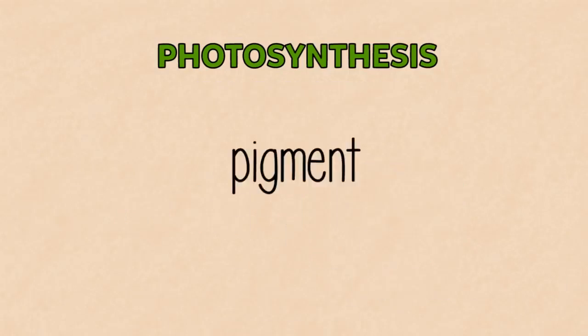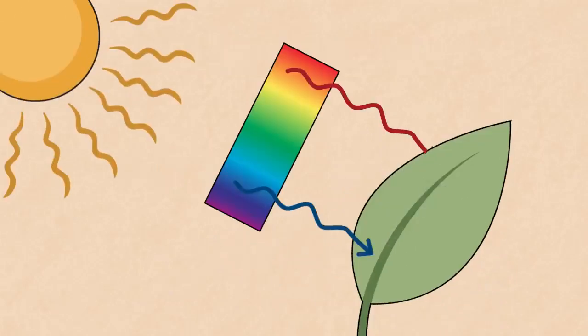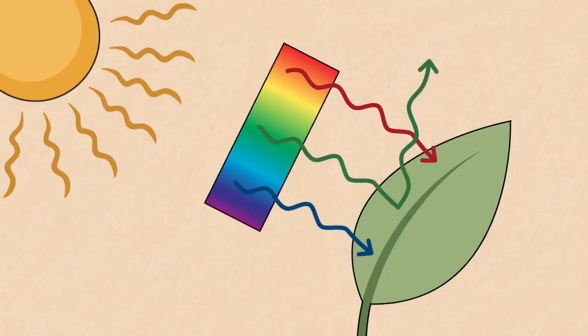Photosynthesis also needs a pigment called chlorophyll. The active site is a magnesium atom, colored green in this model, which absorbs blue and red light from the sun's spectrum to drive the photosynthesis reactions, leaving the green light to be reflected, making the leaves look, well, green.